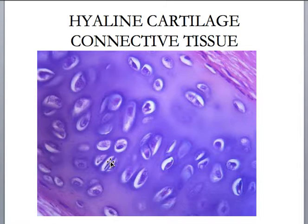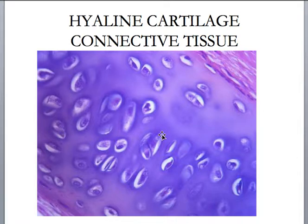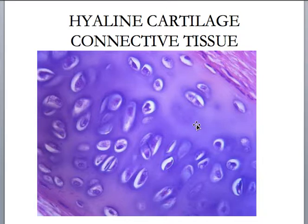Hyaline cartilage. Cartilage is a highly specialized form of connective tissue. When you look at hyaline cartilage, I think it looks like — if you've ever seen Smacks cereal, you know, with the little frog on the box — it looks like a little Smacks cereal. Hyaline is very glassy in appearance. When you go in and out of fine focus, you can really see the glassiness of this hyaline cartilage.